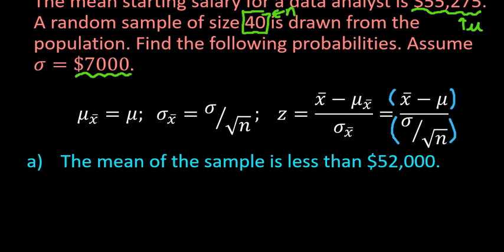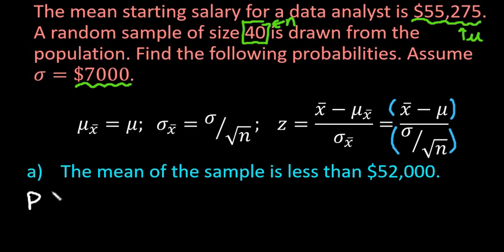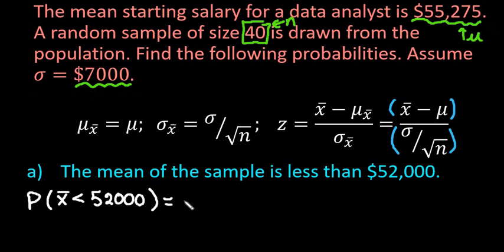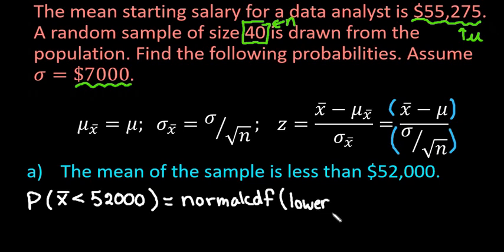We're going to find the probability that x-bar is less than $52,000. We'll be using the normal CDF function. The parameters you need to enter are: the lower value (your lower shaded region), the upper value, the mean — in this case mu sub x-bar, which equals the population mean — and this is different from finding probabilities for a single value.